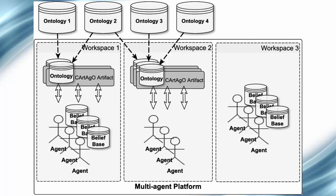This figure explains our approach by means of three workspaces with different configurations. Workspace one highlights that agents can still use their regular knowledge representation approach — for example, belief-based — simultaneously with the new approach proposed here, using artifacts to interact with ontologies. Workspace two uses only the new approach, and workspace three uses only the usual regular approach of representing knowledge in the belief base of agents. Each instance of our artifact can load and encapsulate exactly one ontology; however, each workspace can have any number of instances of this artifact, where each instance references an ontology, and agents can observe and manipulate any number of them. Therefore, we have multi-agent systems that can handle multiple ontologies.